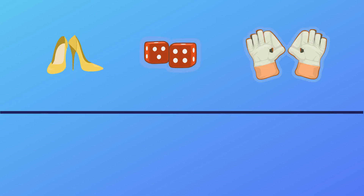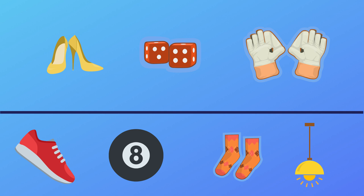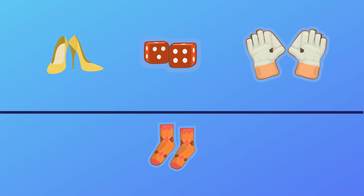Let's look at an example. In the top row we have a pair of shoes, a pair of dice, and a pair of gloves. We need to identify how the above three pictures are alike and choose the similar picture from the bottom row. In the top row, everything comes in pairs. In the bottom row, except socks, all other items are single — hence the pair of socks is the answer.